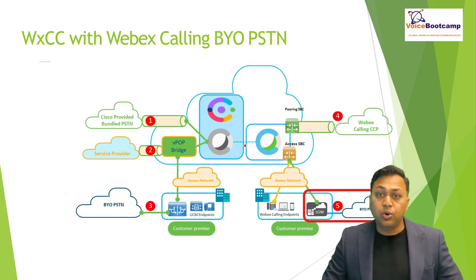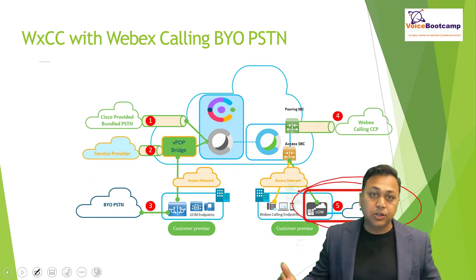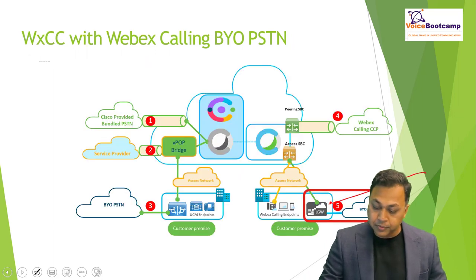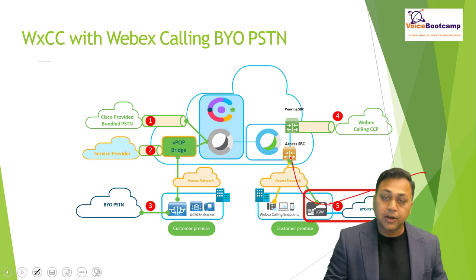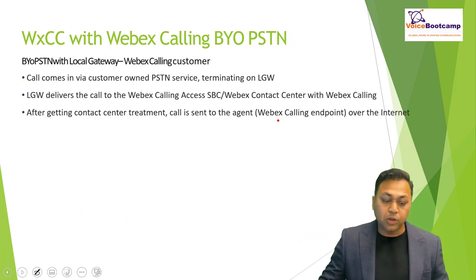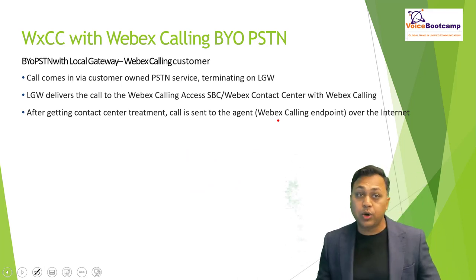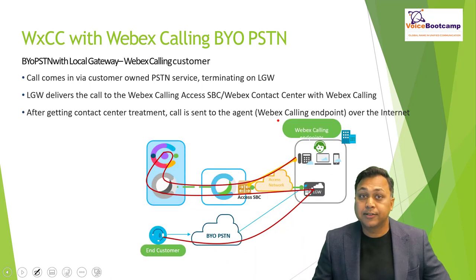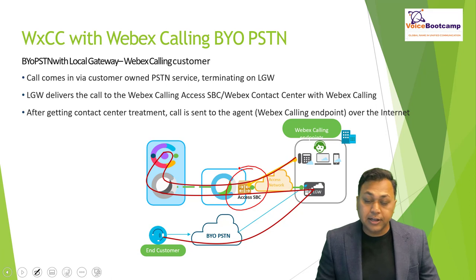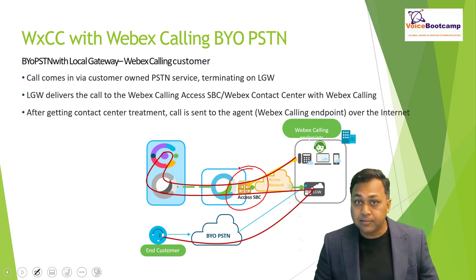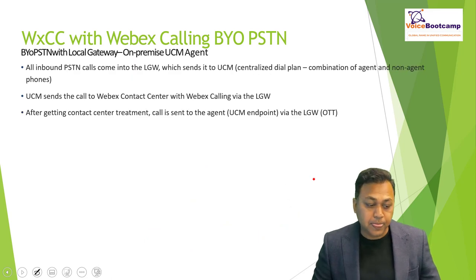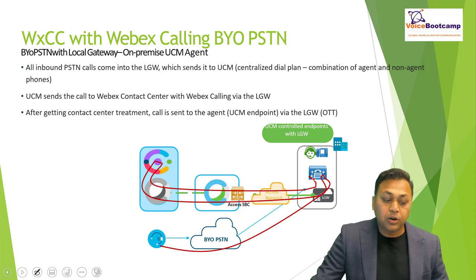Now let's look at bringing your own PSTN — for example, if you already have 20 T1 lines. In this scenario, your call comes in to the Access SBC and gets processed. The local gateway receives the call from the customer's own PSTN and terminates it on the CUBE router. The local gateway delivers the call to the WebEx SBC Access — not the Peering SBC, because Peering is for the cloud connected partner. After treatment, the call is sent to the agent over the internet.